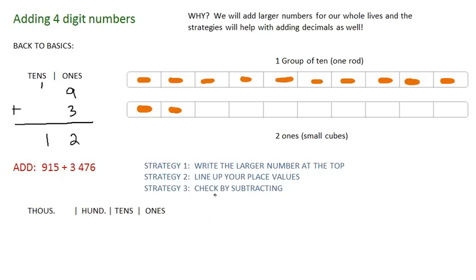So I'm going to start off by writing the larger number at the top. And, oh, it's not 915, it's actually 3,000, so 3,000, 476, plus 915. Don't write the 9 here, because it's not 9,000. We have no thousands, actually. Nine hundred and fifteen.